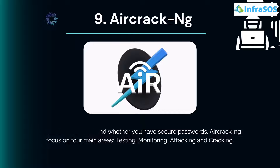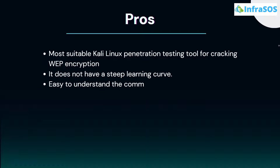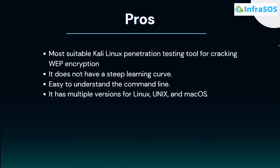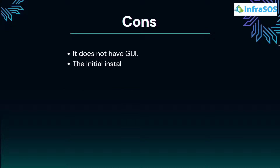Pros of Aircrack-NG include that it is the most suitable Kali Linux tool for cracking WEP encryptions, it does not have a steep learning curve, it is easy to understand even in the command line interface, and it has multiple versions for Linux, Unix, and macOS. Cons include that it does not have a graphical user interface and the initial installation process is quite overwhelming.